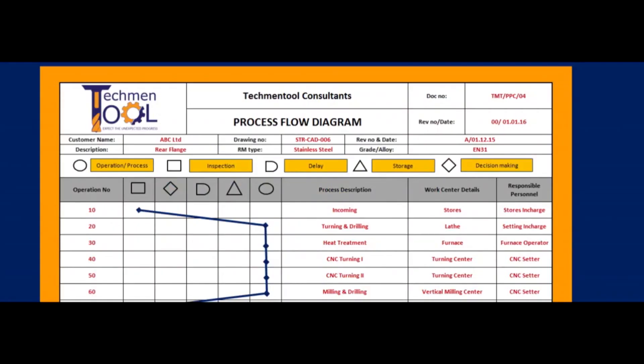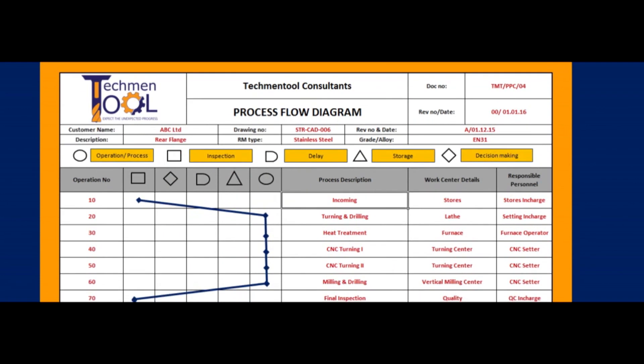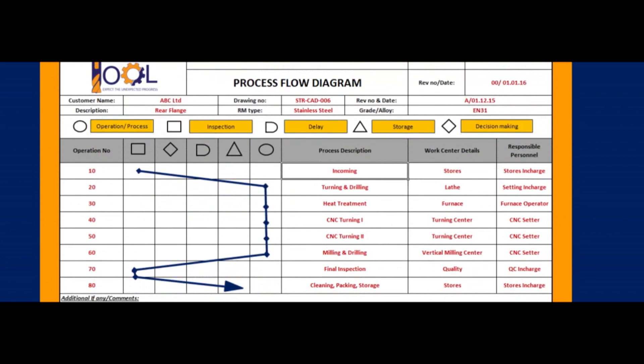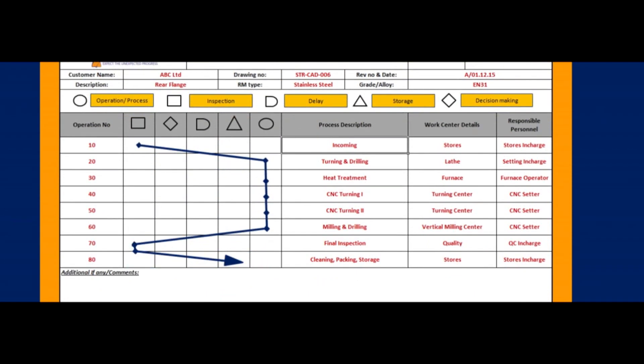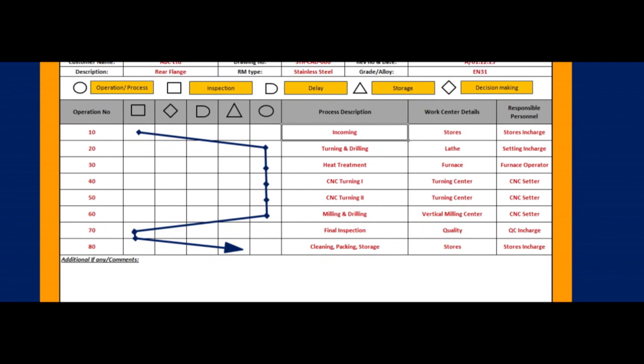Let us look into a sample format of process flow chart. This consists of details about product description, customer details, materials information, and operational details by indicating different symbols and their consequences.